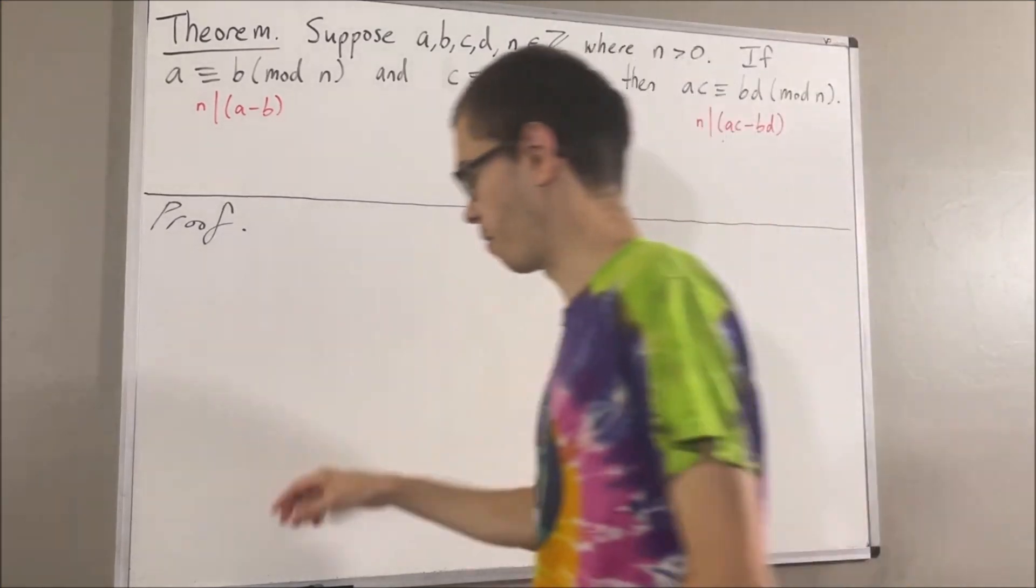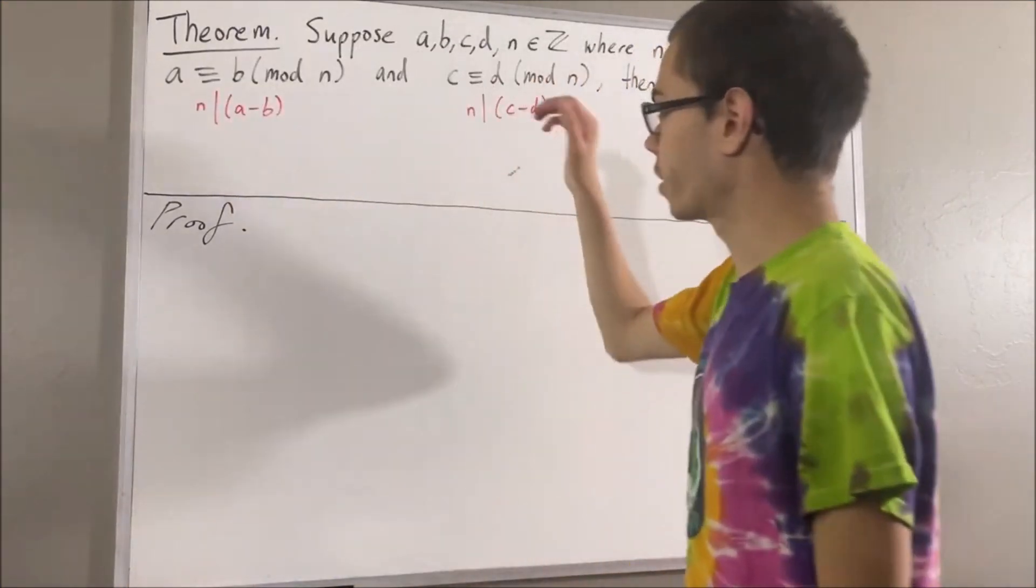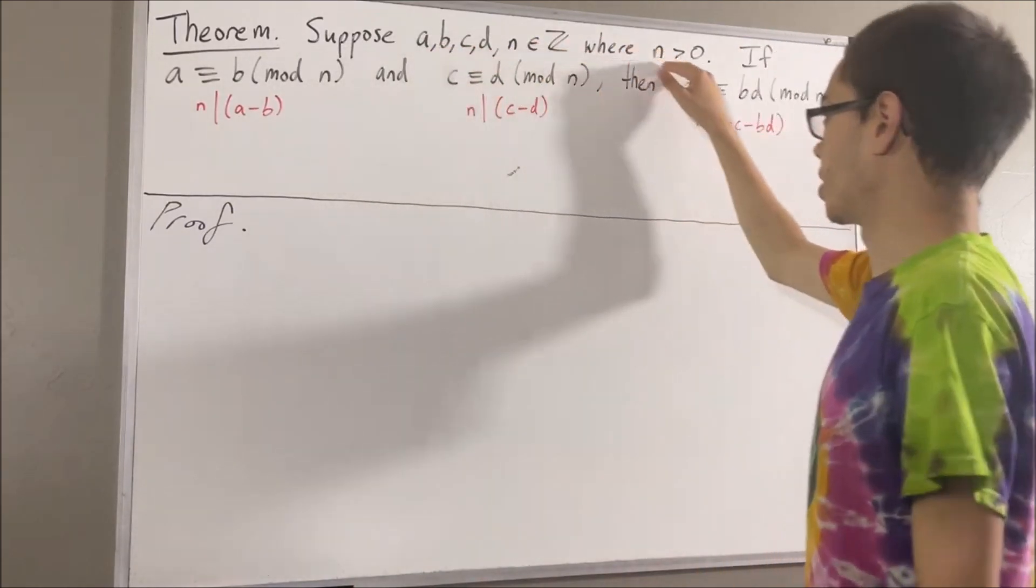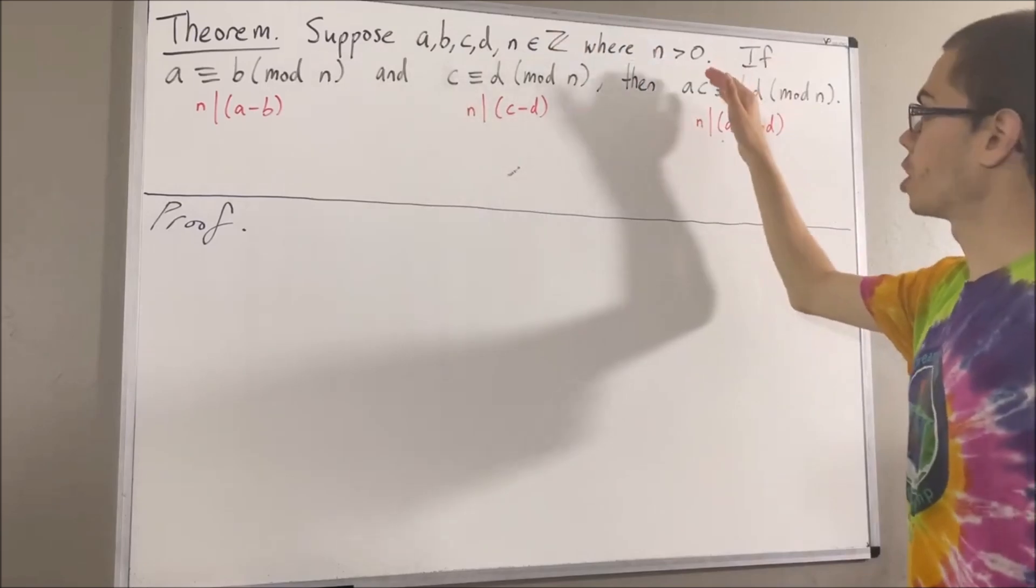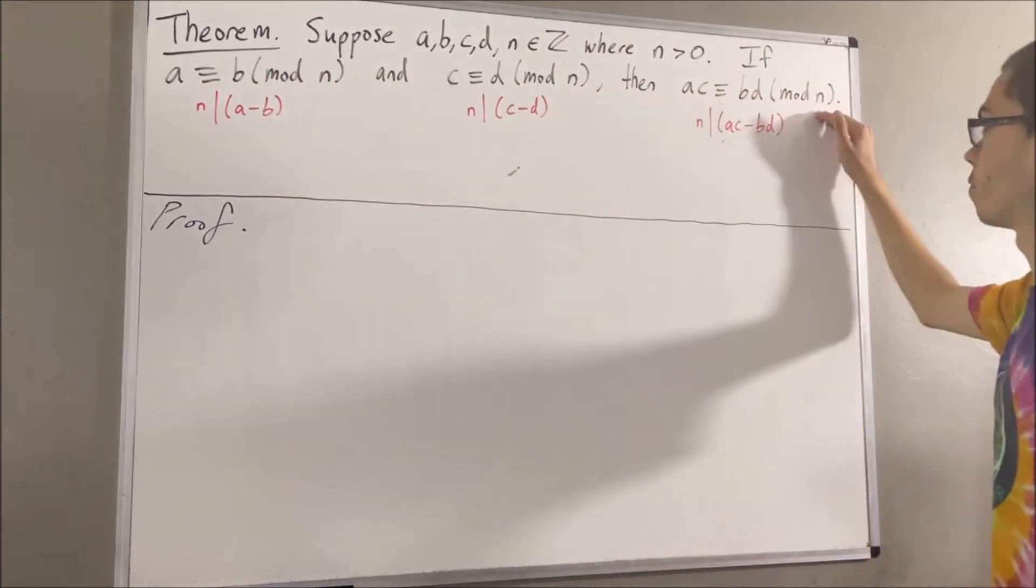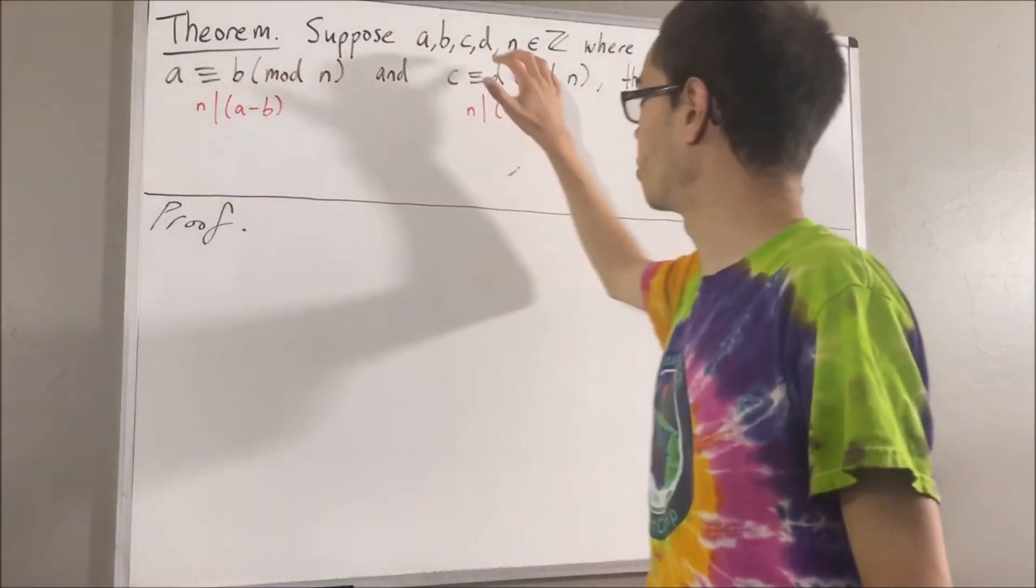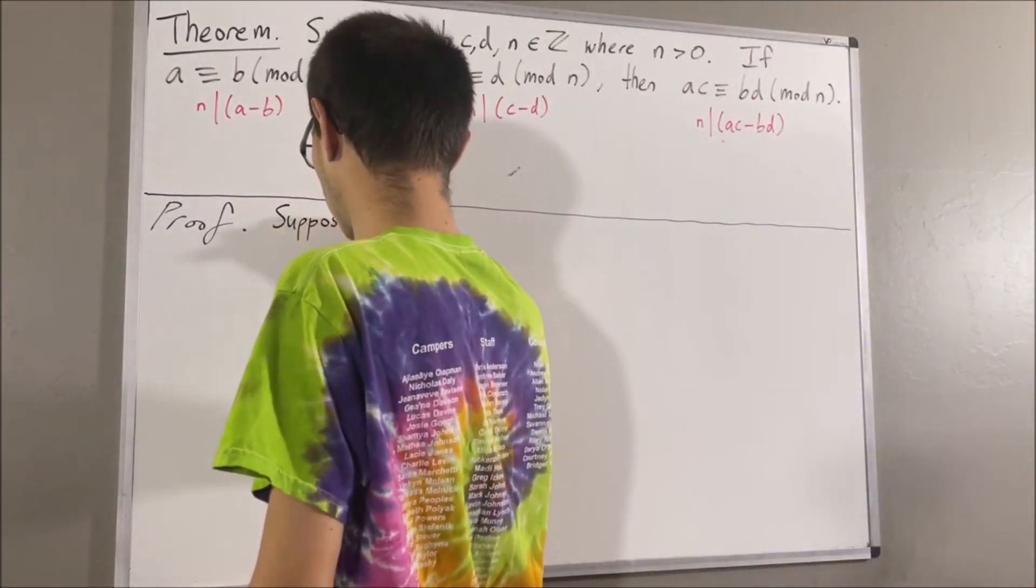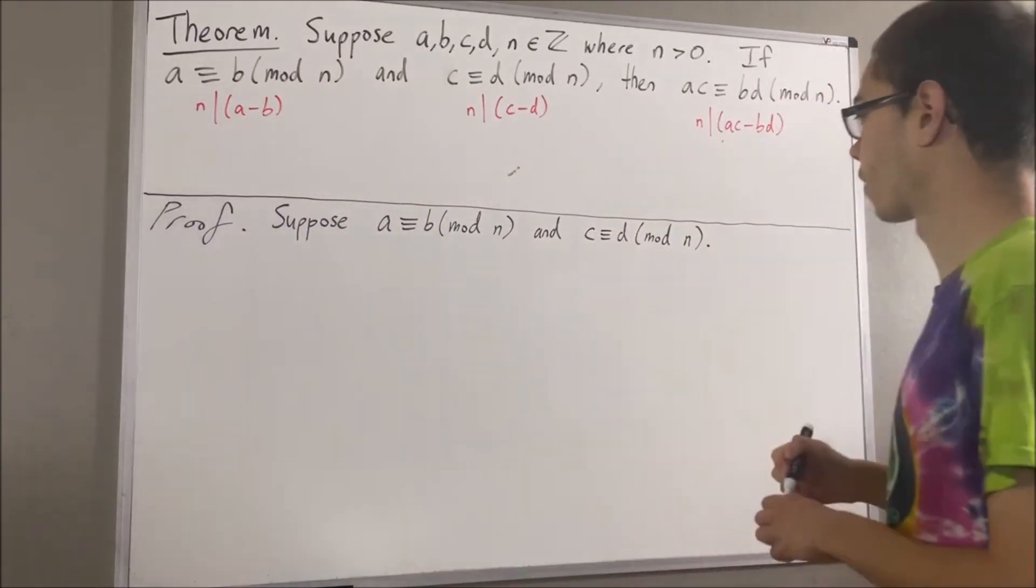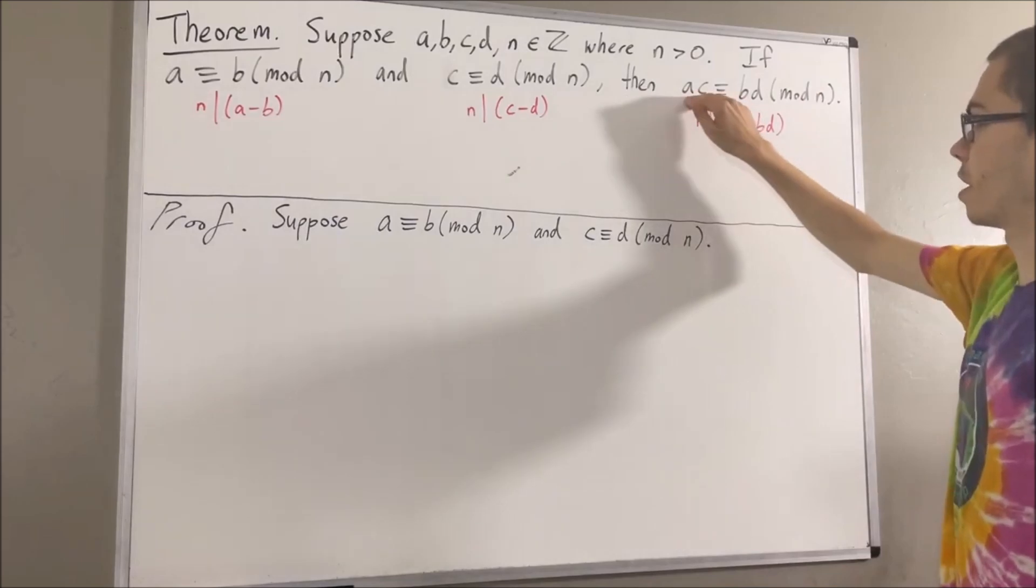Okay, so now let's get into our proof. So we're given integers a, b, c, d, and n where n is greater than zero. And from here, we want to show if this is true, then this is true. So let's suppose that these two things are true. The whole goal from here is to show that this is true.